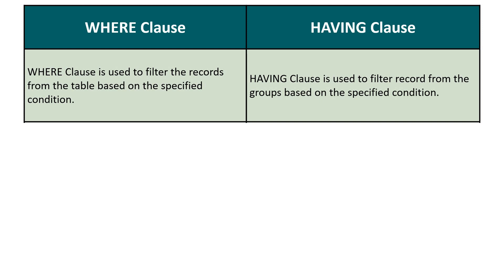Our first difference is: the where clause is used to filter records from the table based on the specified condition, while the having clause is used to filter records from the groups based on the specified condition. We use the where clause when we have to filter rows from the complete table, while we use the having clause if we have to filter data from the groups.